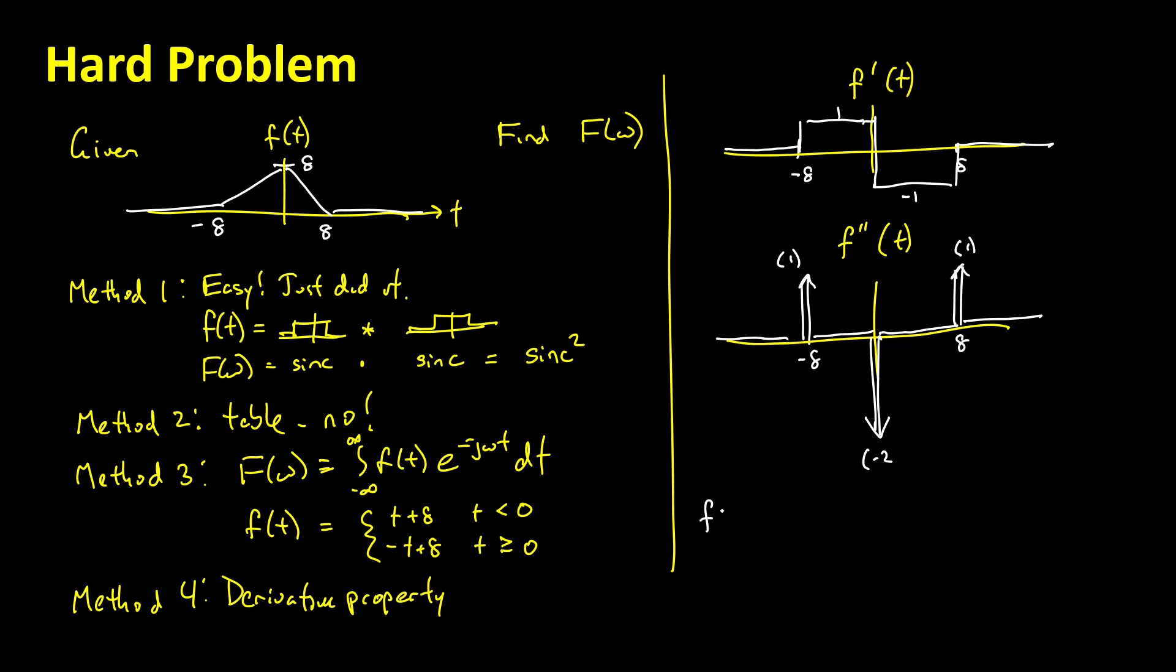Can we find the Laplace transform of f double prime of t? Let's just write down what f double prime of t is. So it's equal to this impulse at t plus 8, that's this first one to the left, and then we're going to subtract 2 times the impulse of t, and then we're going to add an impulse of t minus 8, that's the one on the right. But we know that f prime prime, its Laplace transform, every prime is just like multiplying by a j omega.